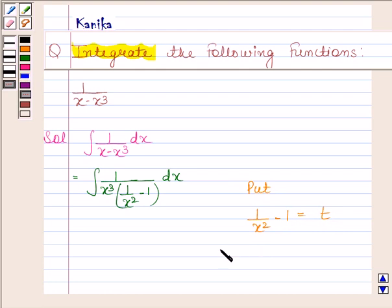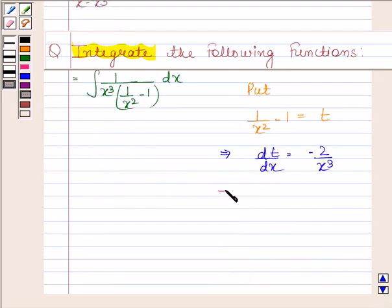Now this implies dt by dx is equal to minus 2 by x cube. This implies minus 1 by 2 into dt is equal to dx by x cube.